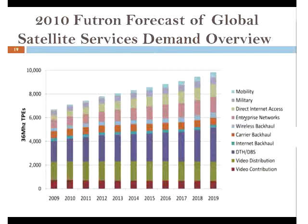A 2010 Futron forecast shows the demand for hosted-as-a-service transponders. In 2009, demand exceeded 6,000 transponders of 36 MHz each. By 2019, demand is projected at about 10,000 transponders. Each satellite has about 500 MHz of bandwidth at lower frequencies, divided into 36 MHz transponder units, showing that demand for space segment capacity is steadily increasing.